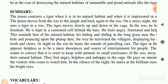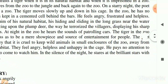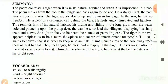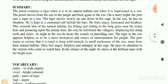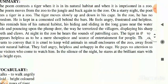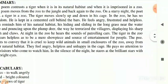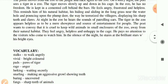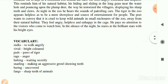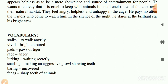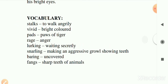The tiger in the zoo appears helpless, reduced to a mere showpiece and source of entertainment for people. The poet wants to convey that it is cruel to keep wild animals in the small enclosures of a zoo. Away from their natural habitat they feel angry, helpless, and unhappy in the cage. He pays no attention to visitors; in the silence of the night he stares at the brilliant stars with his bright eyes, avoiding visitors entirely.